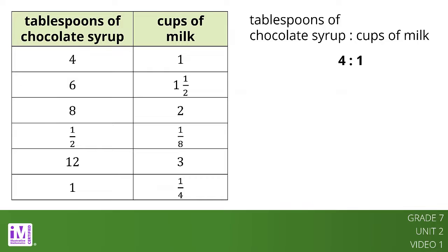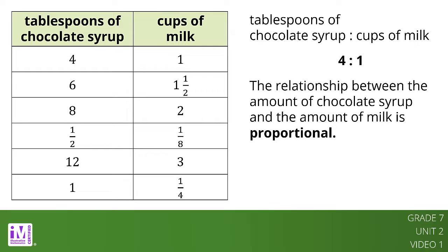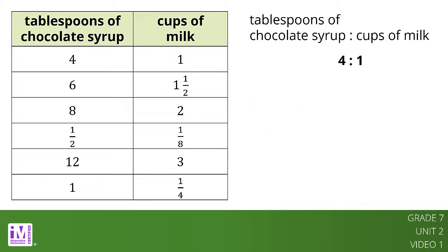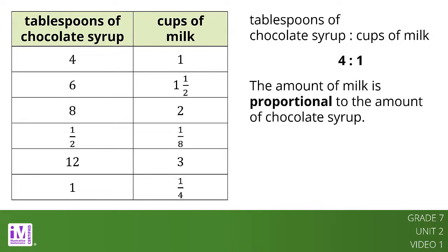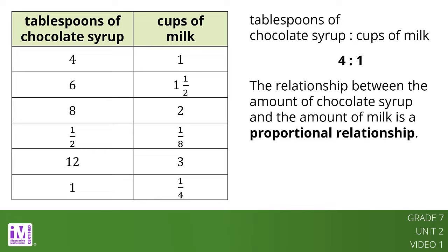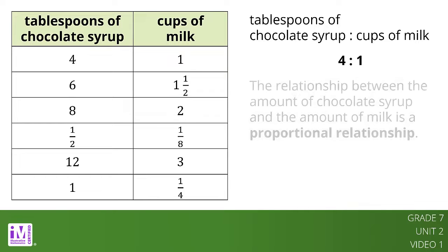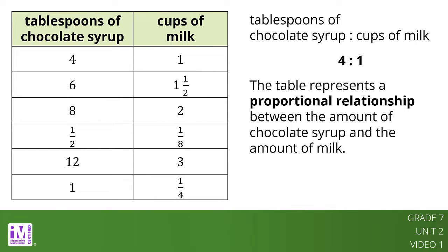To describe the relationship between these quantities, we could say the relationship between the amount of chocolate syrup and the amount of milk is proportional. Or, we could say the amount of milk is proportional to the amount of chocolate syrup. We could also say the relationship between the amount of chocolate syrup and the amount of milk is a proportional relationship. And lastly, the table represents a proportional relationship between the amount of chocolate syrup and the amount of milk.